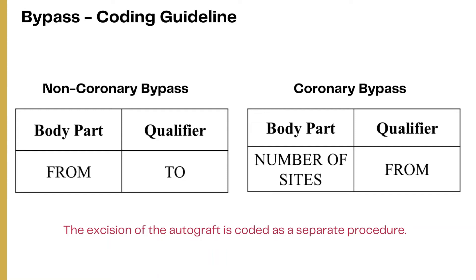Another important point: obtaining an autograft during a bypass procedure, specifically coronary artery bypass procedures, is coded separately and is generally coded with the root operation excision. This will be an additional code along with the coronary artery bypass codes if a graft is harvested.